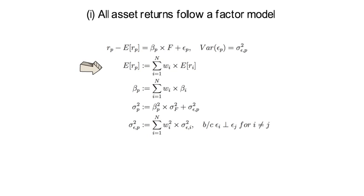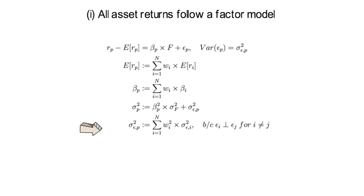The expected return of the portfolio is simply the linear combination of expected returns of individual assets times w_i, which reflects the relative weight of asset i in the portfolio. Beta P is also the weighted average of individual betas. The total variance sigma squared P has two components: beta squared P times the variance of the factor return, plus sigma squared epsilon P. Sigma squared epsilon P is the linear combination of asset-specific risk sigma squared epsilon i, weighted by w_i squared.